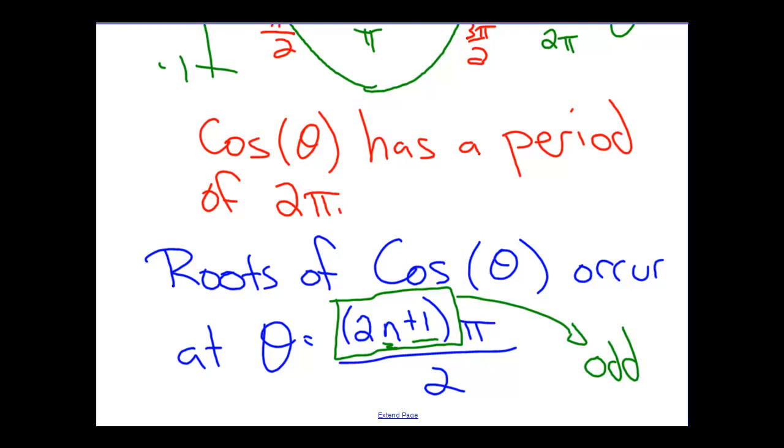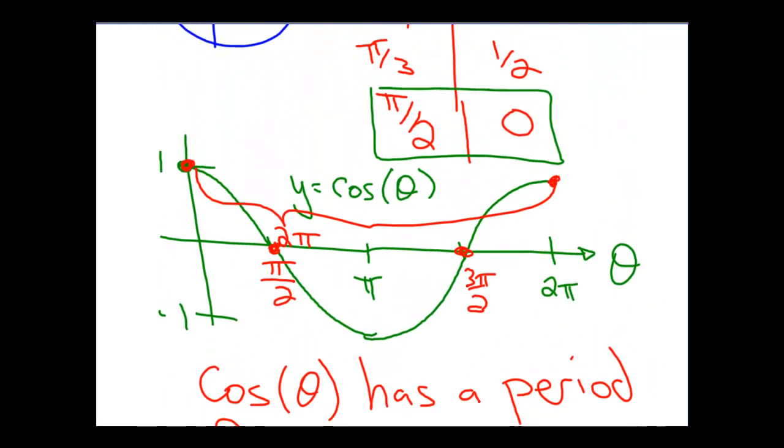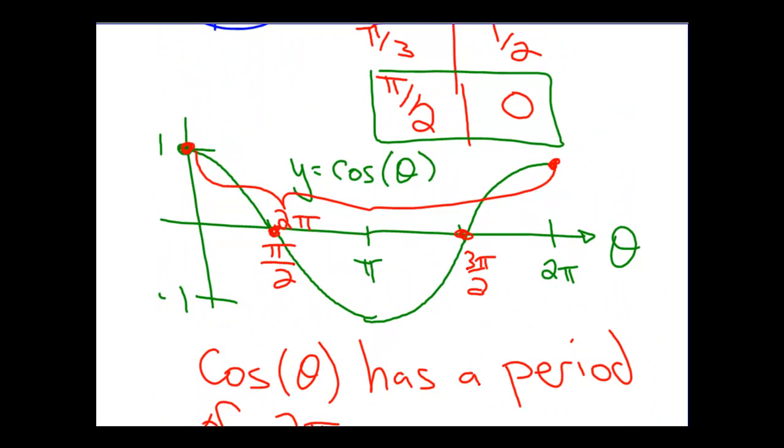So this is just a way of saying that the cosine function has a root whenever we have an odd number of π divided by 2. We want to be careful because cosine certainly does not have roots at whole numbers of π, even numbers of π divided by 2. It does not have a root at 2π over 2 or at 4π over 2. So only when we have an odd number of π over 2.